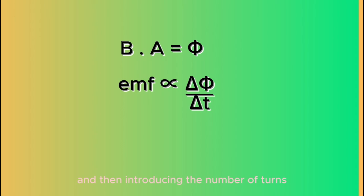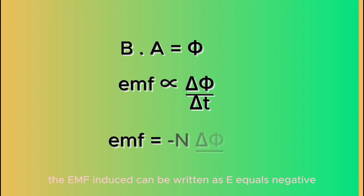And then, introducing the number of turns in the equation as well, the EMF induced can be written as E equals negative N delta phi over T. This equation represents all the factors on which the induced EMF depends. And this is an equation for Faraday's law of electromagnetic induction.